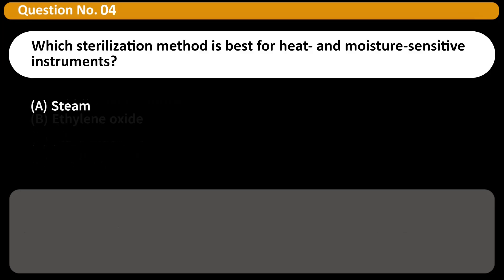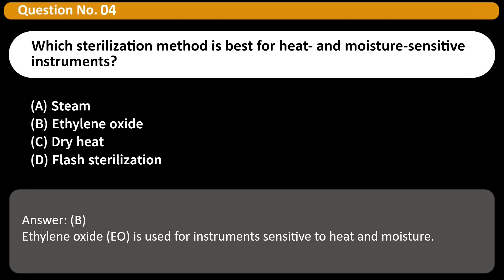Which sterilization method is best for heat and moisture-sensitive instruments? A. Steam, B. Ethylene oxide, C. Dry heat, D. Flash sterilization. Answer B. Ethylene oxide (EO) is used for instruments sensitive to heat and moisture.